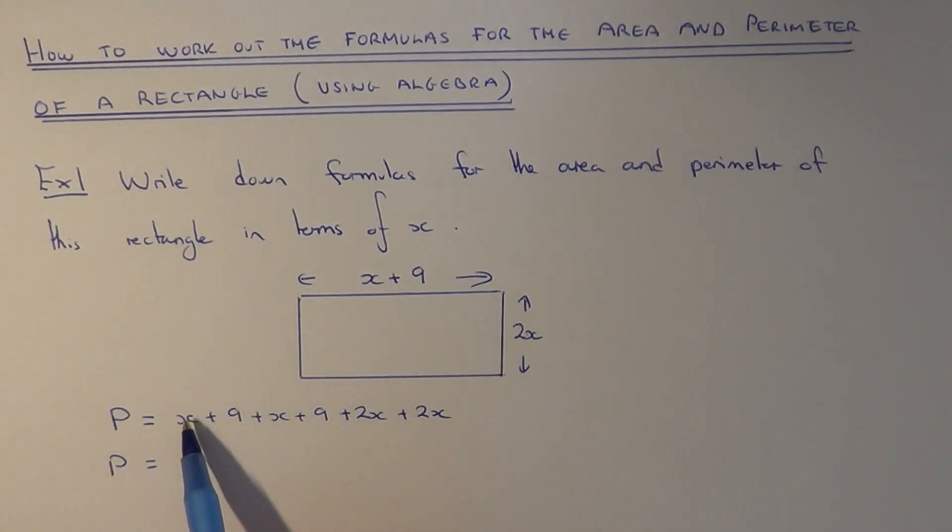If we just add up the x terms 1x add 1x add 2x add 2x gives 6x and if we add up our numbers plus 9 add 9 is 18. So our formula for the perimeter is p equals 6x plus 18.